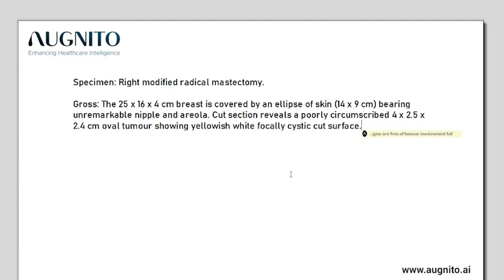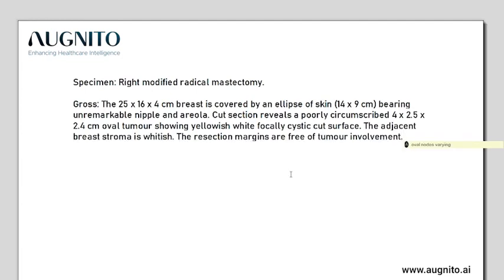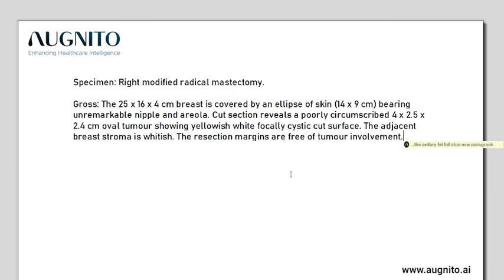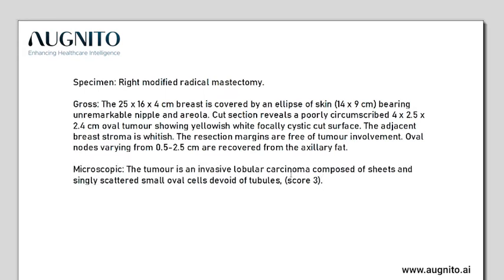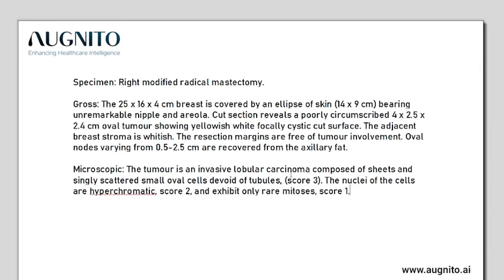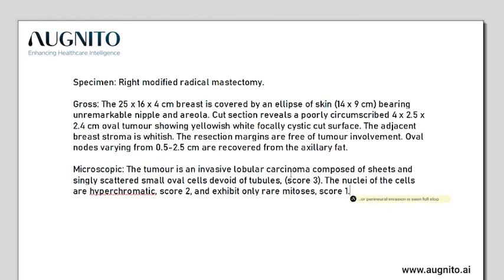Oval nodes varying from 0.5 to 2.5 centimeters are recovered from the axillary fat. Microscopic: The tumor is an invasive lobular carcinoma composed of sheets and singly scattered small oval cells devoid of tubules (score 3). The nuclei of the cells are hyperchromatic (score 2) and exhibit only rare mitosis (score 1). The supporting stroma is sclerotic. No vascular emboli or perineural invasion is seen. The adjacent breast shows changes of atypical hyperplasia.